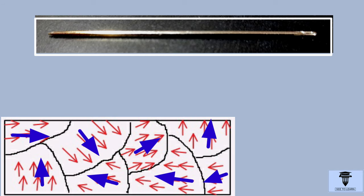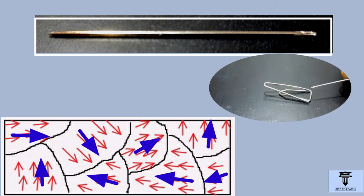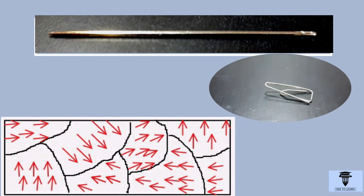As a result, the net magnetic field of the unmagnetized material is almost zero. And so, we do not see magnetism in them.